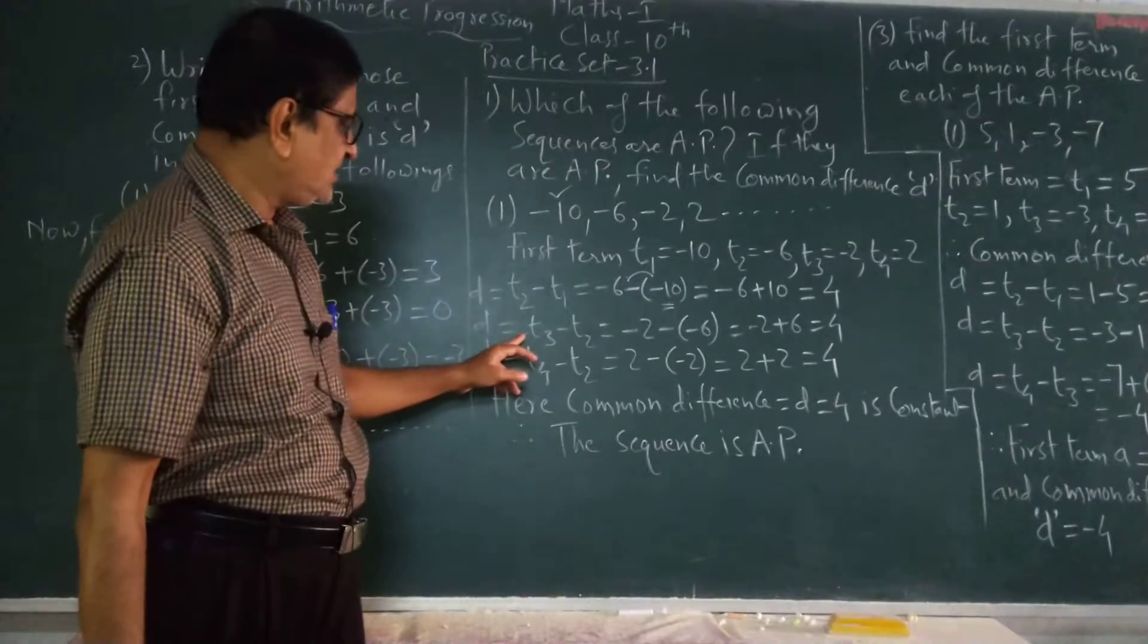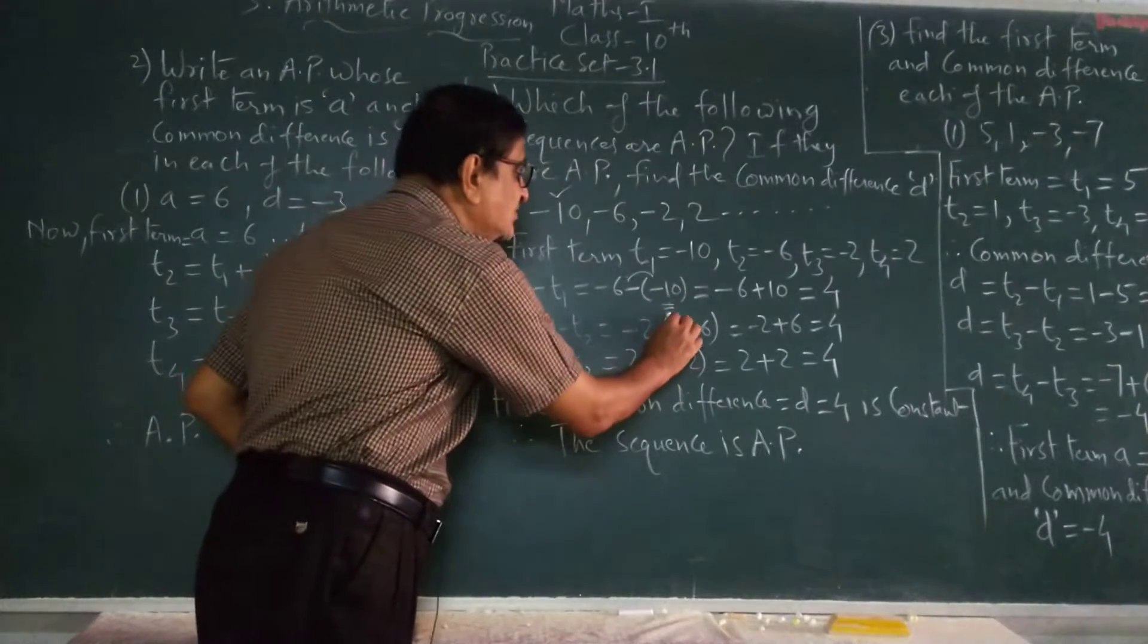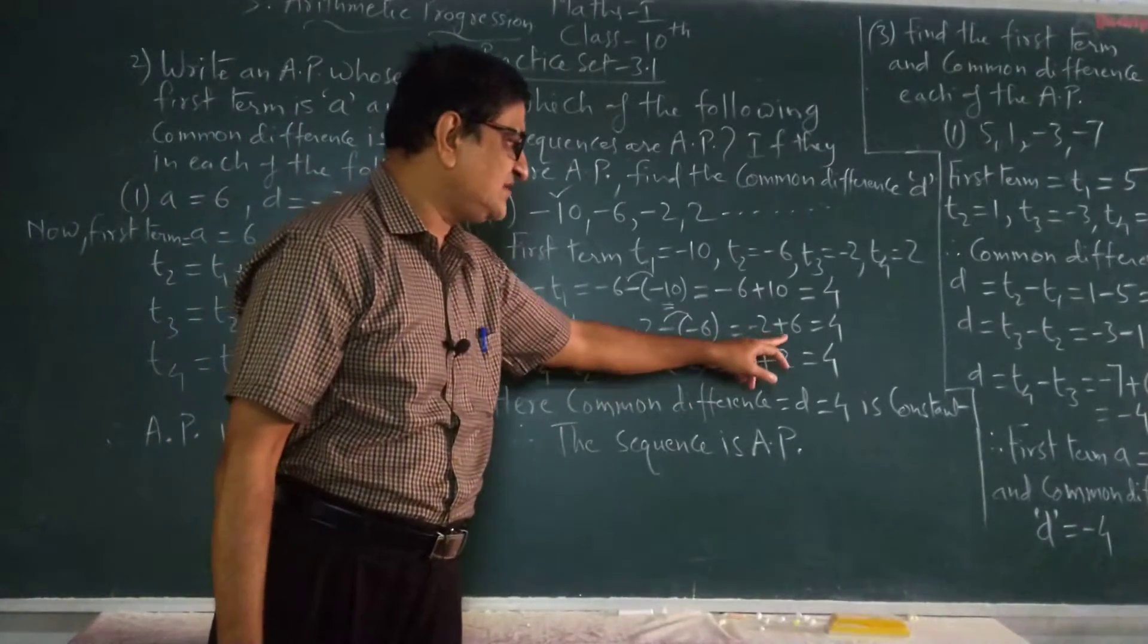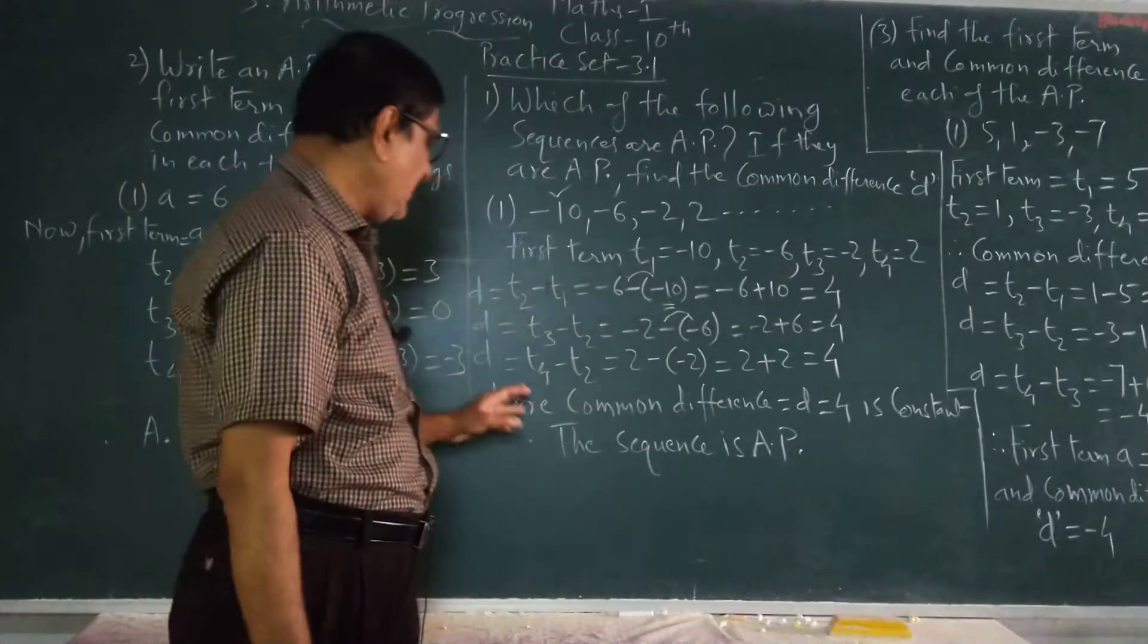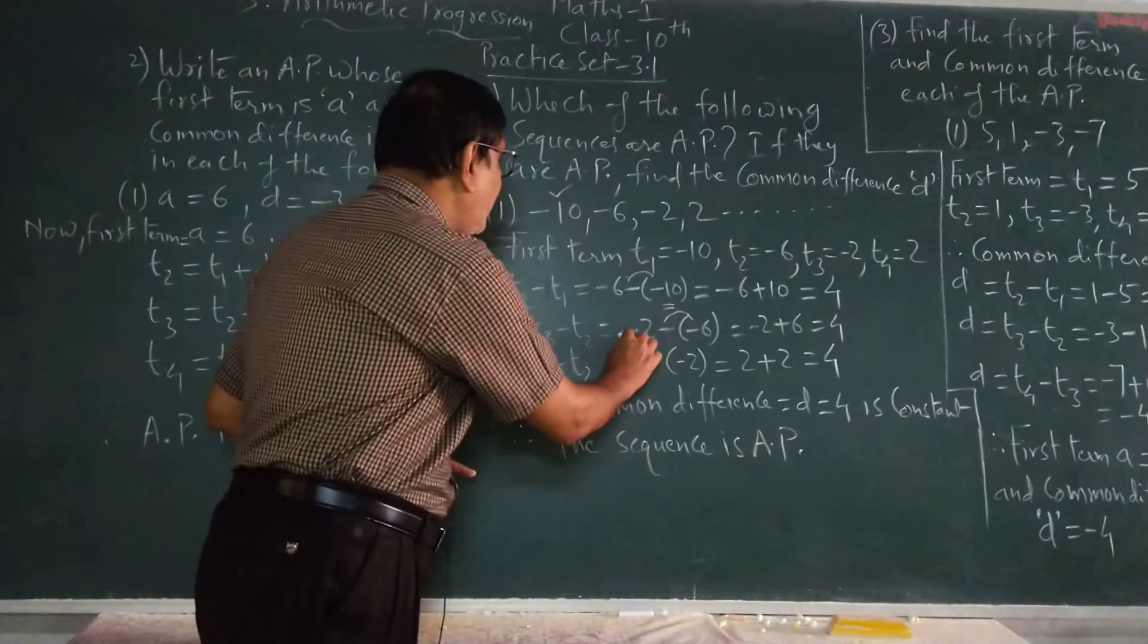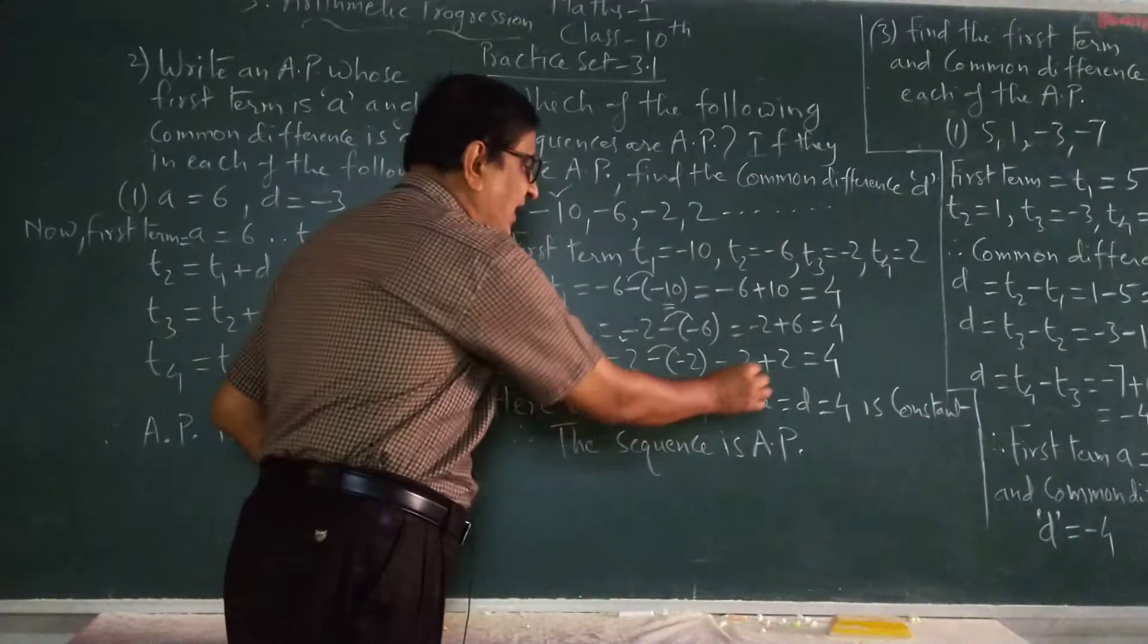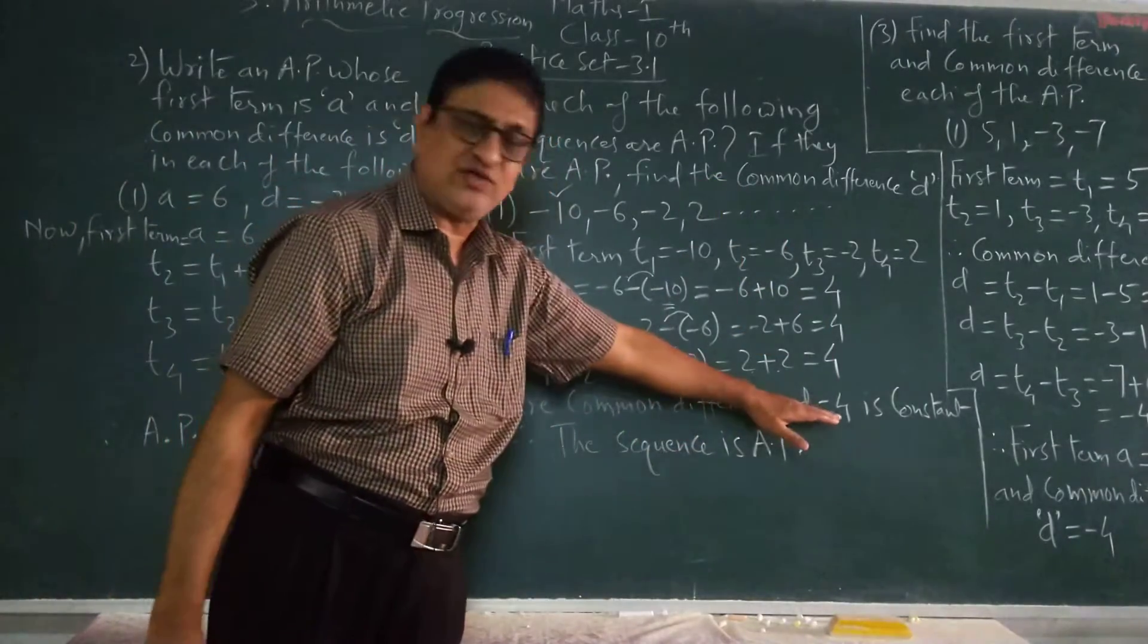Now D is equal to T3 minus T2, minus 2. So minus T2, minus of minus 6. So minus 2 plus 6 is equal to 4. Now it is T4 minus T3, 2 minus minus 2, plus 2, plus 2, 4. Common difference d is equal to 4.